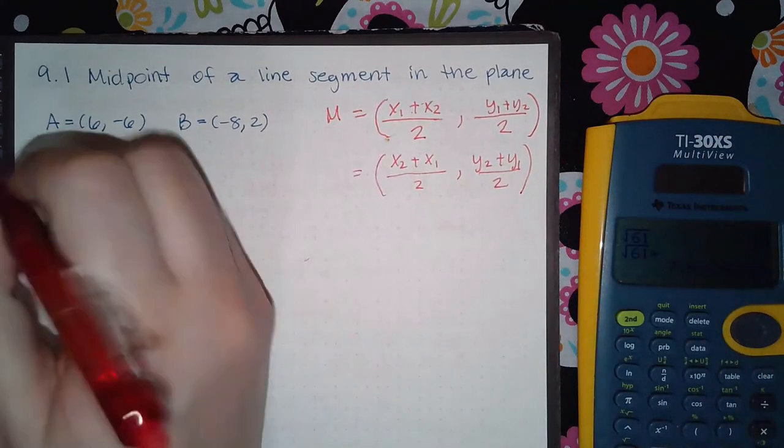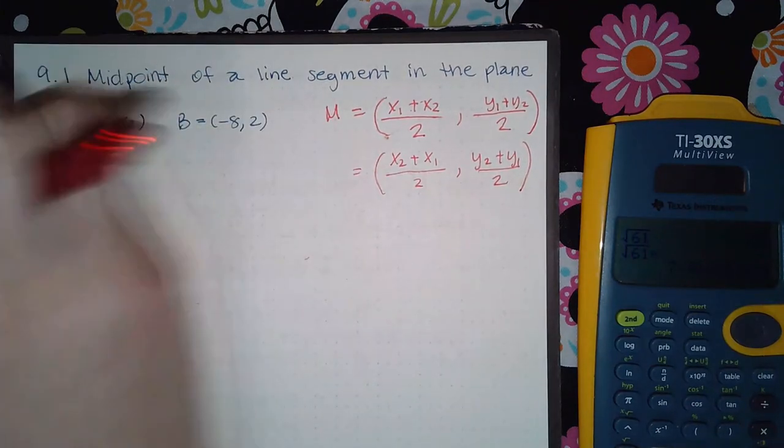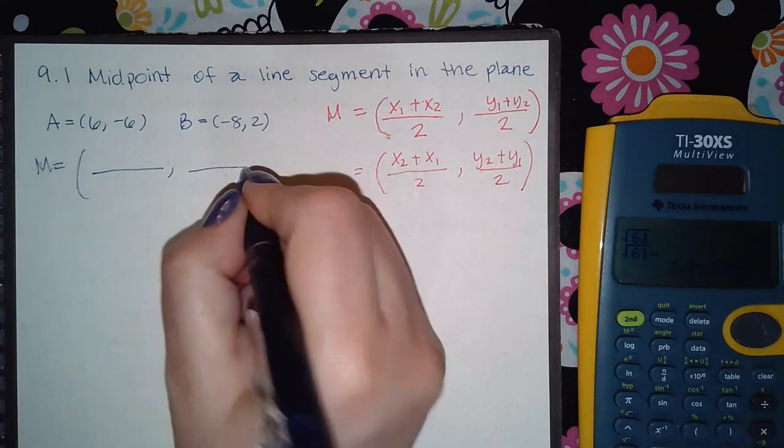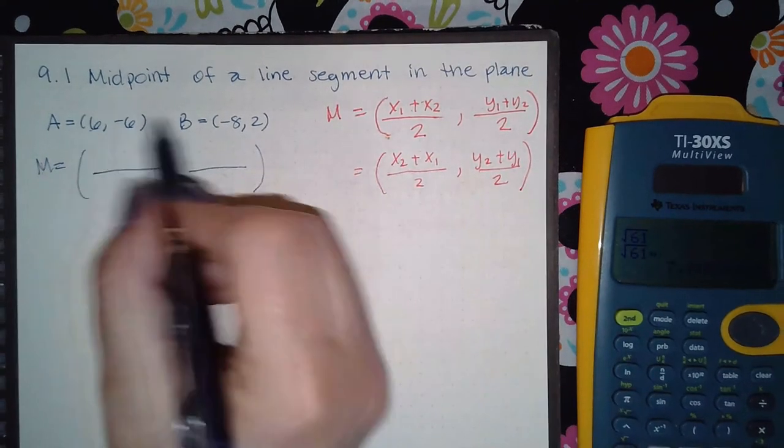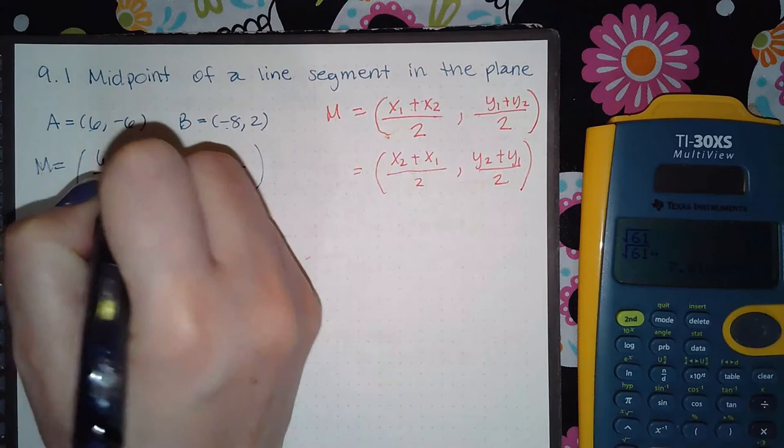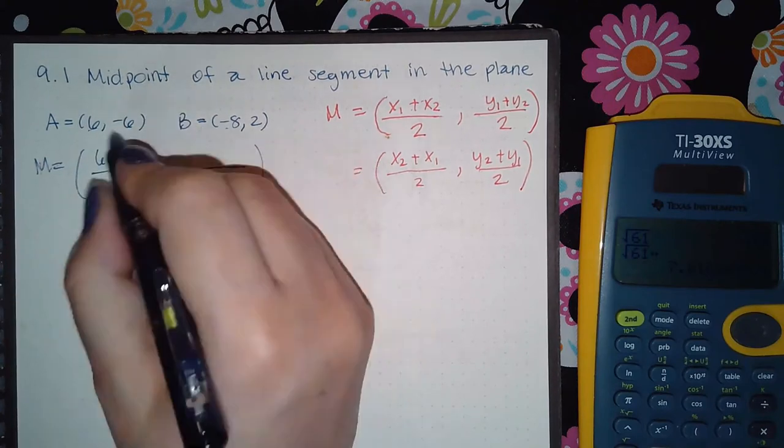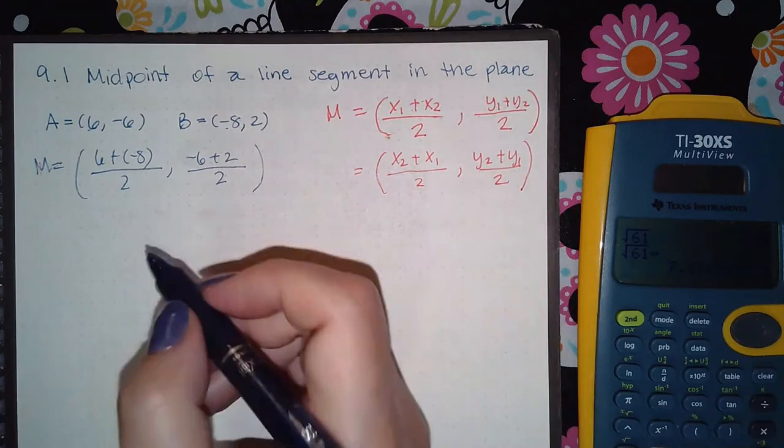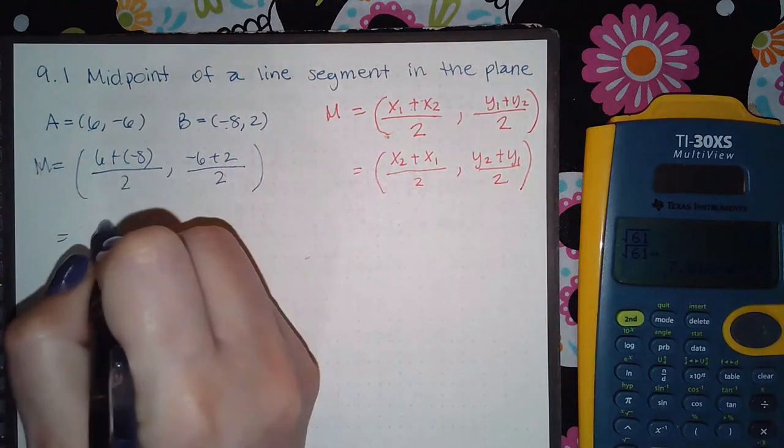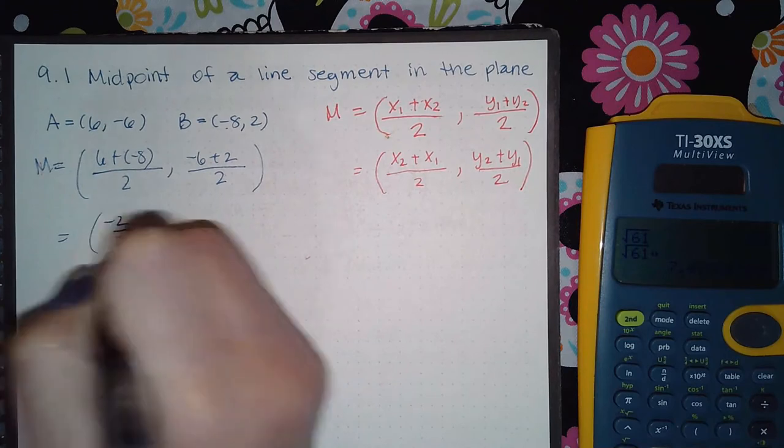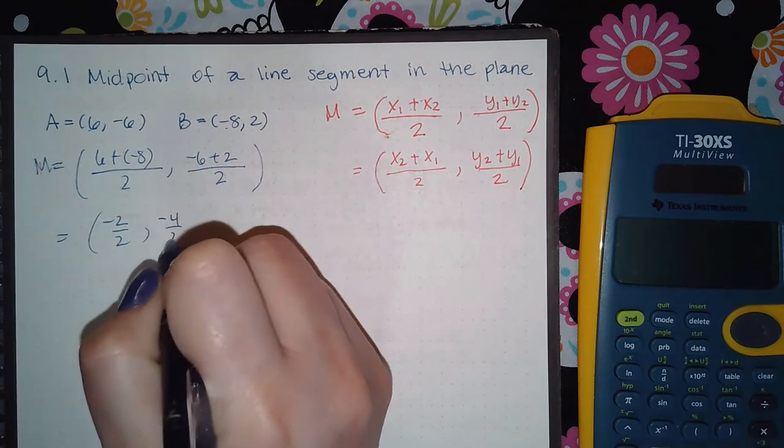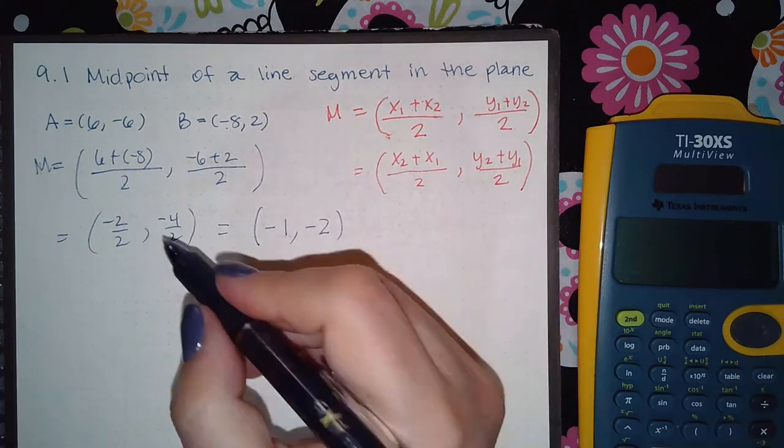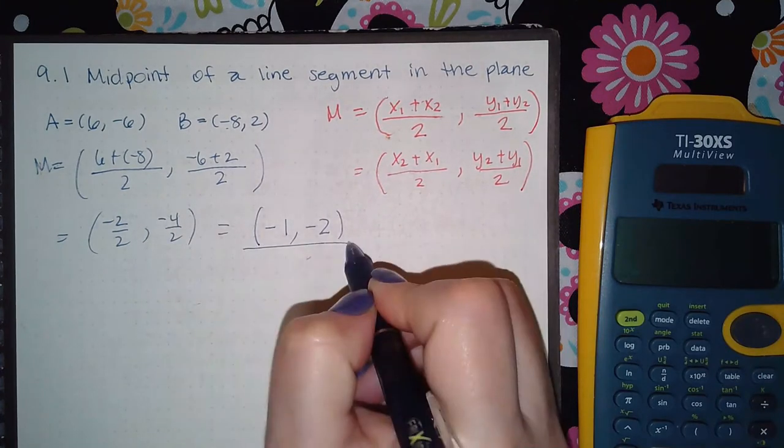So for this one, my midpoint would be two fractions. We're going to take the x values together over 2 and then the y values together over 2. We get negative 2 over 2 and negative 4 over 2, which gives us the point negative 1 comma negative 2 once we simplify those fractions. So this is the midpoint.